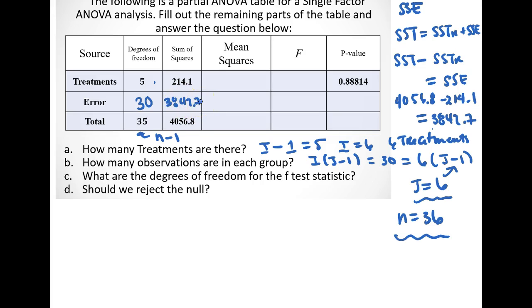And so now to find the mean squares, this is really pretty straightforward because the mean squares are simply just the sums of squares divided by their corresponding degrees of freedom. And so we'll find that the mean square for the treatment is equal to SSTR divided by I minus 1, which in this example is 214.1 divided by 5, which will be equal to 42.82.